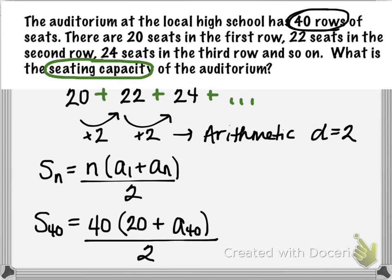In other words, we can't move forward with this computation until we first find out the value of a sub 40. This is basically asking for the 40th term in this sequence, which represents the number of seats in the 40th row. We could find that by adding 2 repetitively and doing that 40 times, but that's not very efficient. So we can go back to something we've previously studied, which is the formula for any term in an arithmetic sequence.